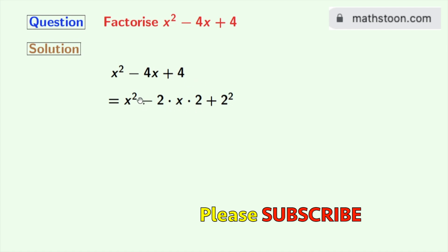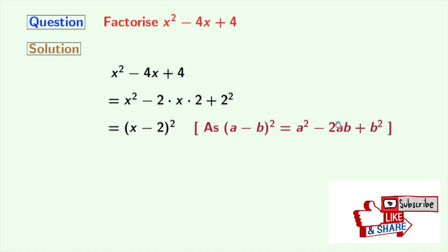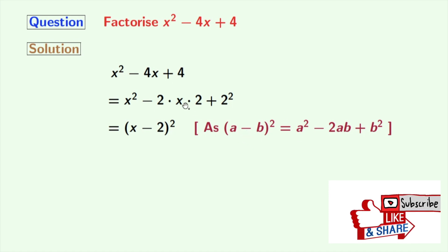This expression is now in the form of a squared minus 2ab plus b squared, where a is x and b is 2. So we can now apply the formula of a minus b whole square in this expression.